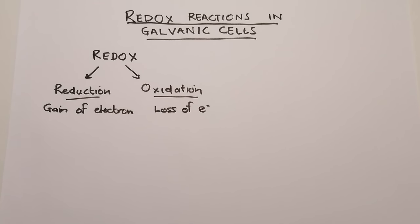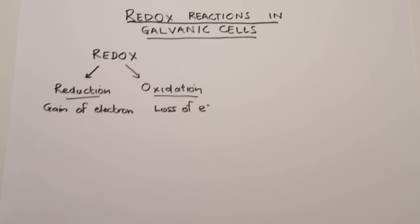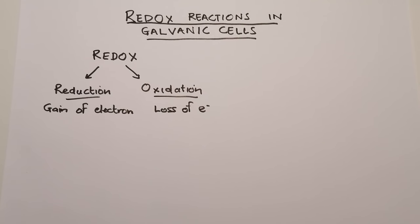A redox reaction involves a transfer of electrons. At a later stage we talk about electrolysis — in that case, what we are simply doing is having electrons move from one electrode to the other electrode.